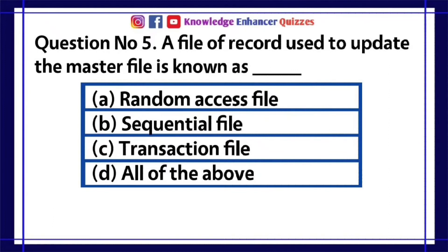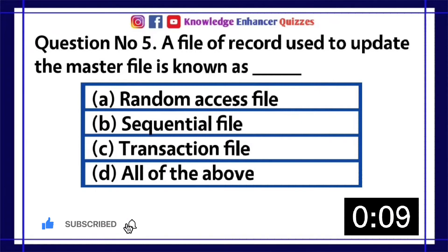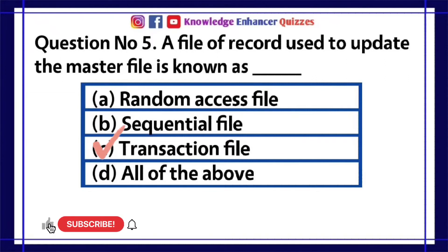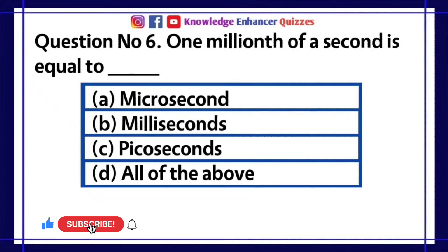Question number 5. A file of record used to update the master file is known as dash. A. Random access file. B. Sequential file. C. Transaction file. D. All of the above. Option C is the right answer.